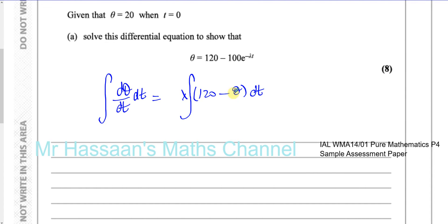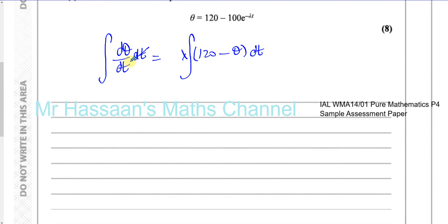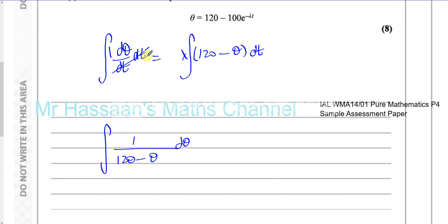I'm going to integrate both sides with respect to t. The dt's are going to cancel, leaving 1 dθ. On the side where it says dθ, you have to have all the variables in theta. On the side where it says dt, you have to have all the variables in t. So I'm going to divide both sides by (120 minus theta), so this becomes 1 over (120 minus theta), integrated with respect to theta because the dt's cancelled out. On the other side I'm left with just 1 dt — there are no other t terms. Don't forget the lambda — it's a constant, so I write it outside.